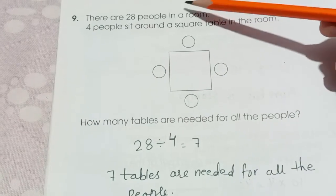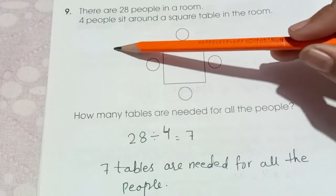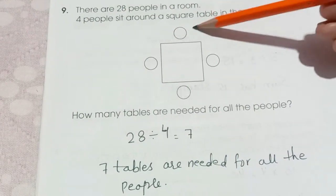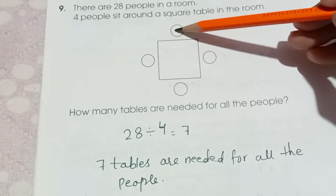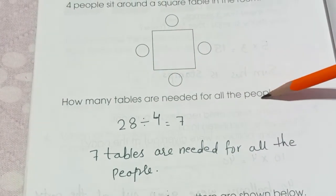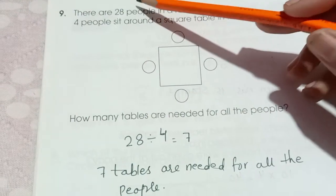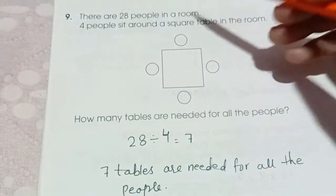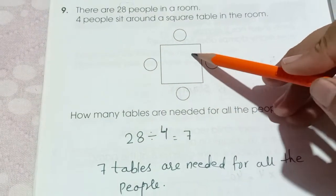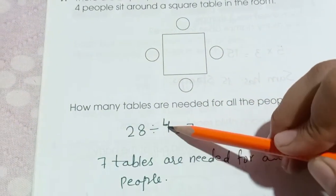Number 9. There are 28 people in a room. 4 people sit around a square table in the room. This is a square table and these are 4 people. How many tables are needed for all the people? So there are 28 people. 28 divided by 4 because the space is for the 4 people.